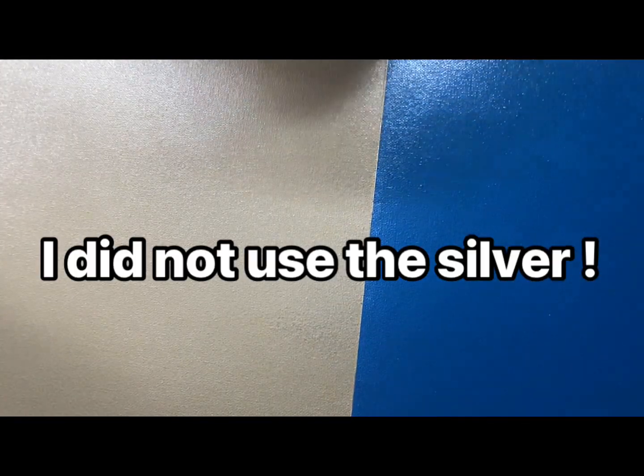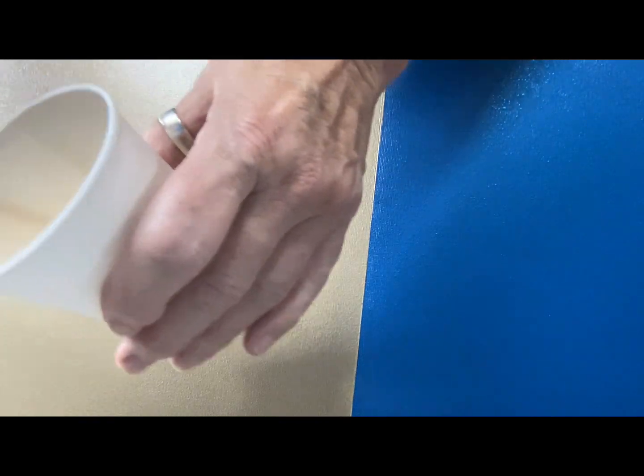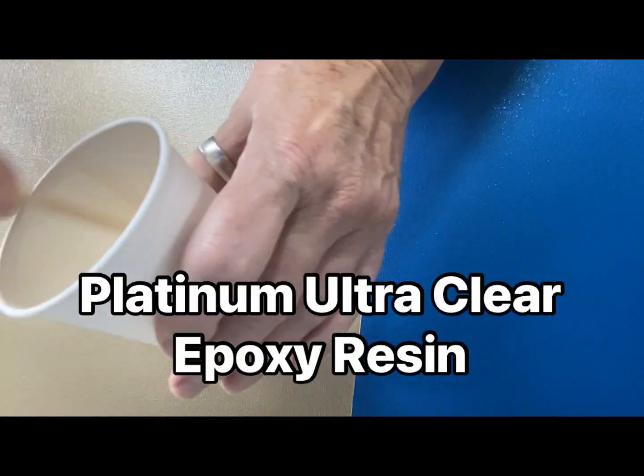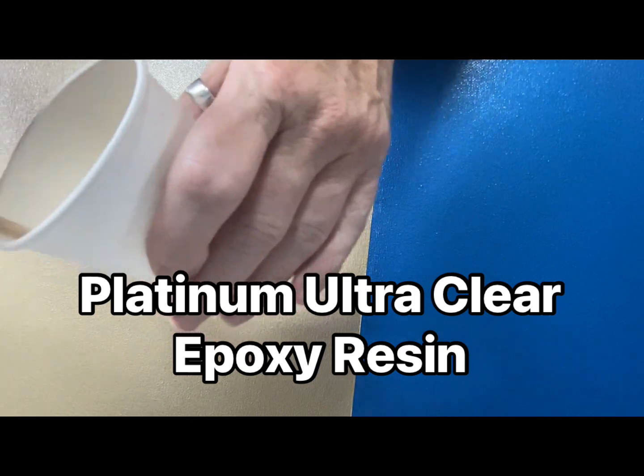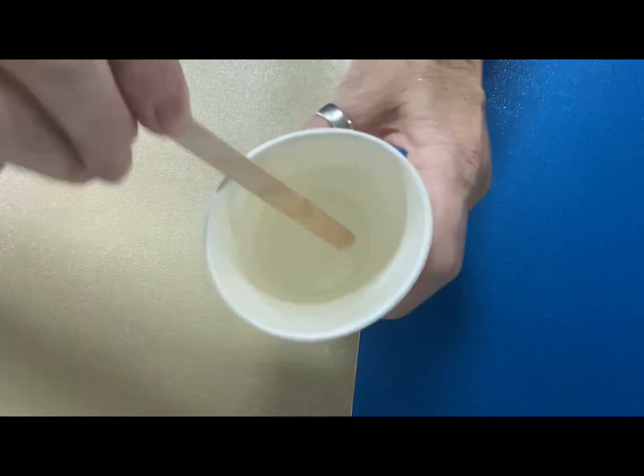First thing I'm going to do - I've just mixed up a little bit of platinum ultra clear resin with uni base, two parts to one. It's mixed by volume, not by weight. Make sure it's thoroughly mixed - stir it around the edges, off the stick, and across the base for about three minutes.